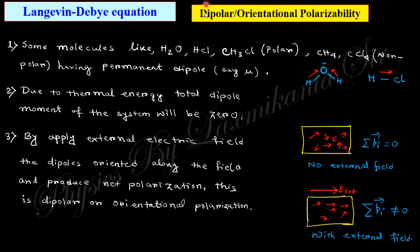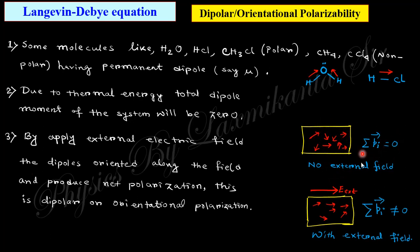The Langevin-Debye theory depends on dipolar orientation polarizability. When we discuss polarizability, there are mainly three types: electronic, ionic, and dipolar orientation. Electronic polarizability arises when electrons are displaced by the external electric field; ionic when ions are separated by the external electric field. Dipolar orientation polarizability involves permanent dipole moments within the material — for example, water or HCl have permanent dipole moments, but as a whole the total dipole moment is zero due to thermal randomization. When we apply an external electric field, the dipoles become oriented and the total dipole moment is no longer zero.